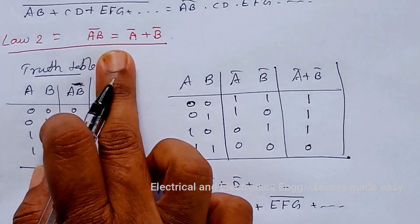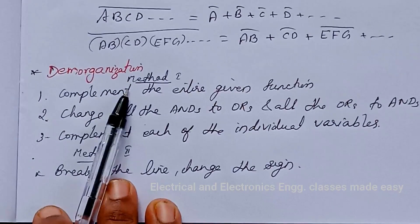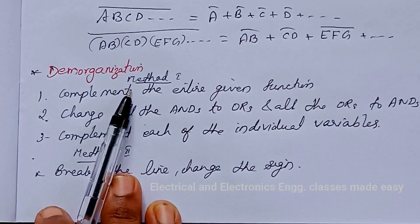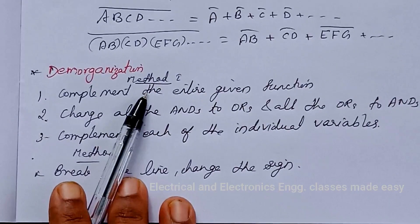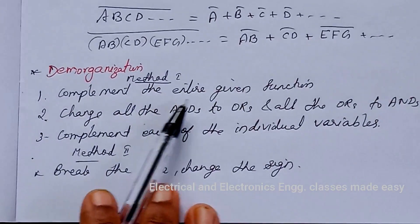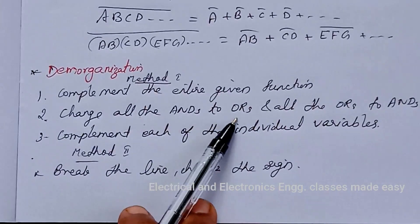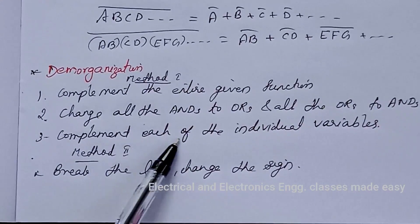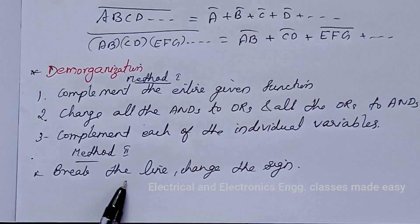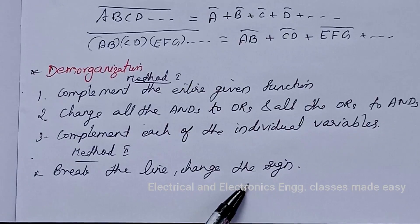This is De Morgan's second law. Next is DeMorganization. DeMorganization is the procedure to reduce Boolean expressions. There are two methods. The first method is: complement the entire given function, then change all ANDs to ORs and all ORs to ANDs, and then complement each of the individual variables. The second method is the break-the-line, change-the-sign method.